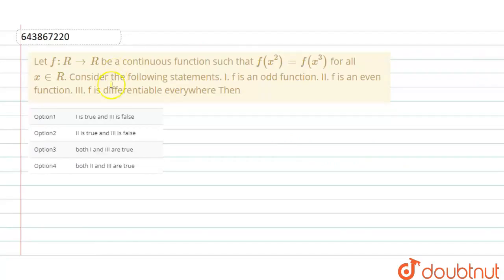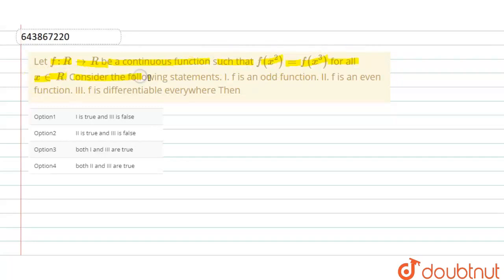Question is given that: let f : ℝ → ℝ be a continuous function such that f(x²) = f(x³) for all x belonging to real numbers. Consider the following statements: first, f is an odd function; second, f is an even function; third, f is differentiable everywhere.